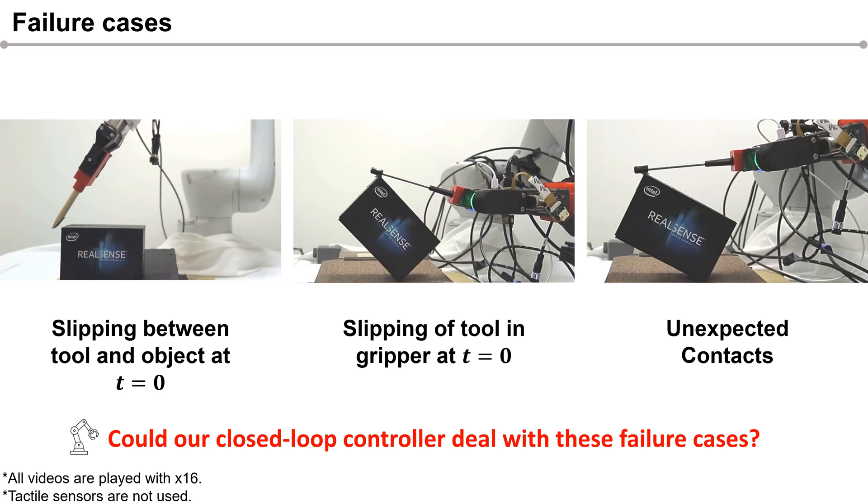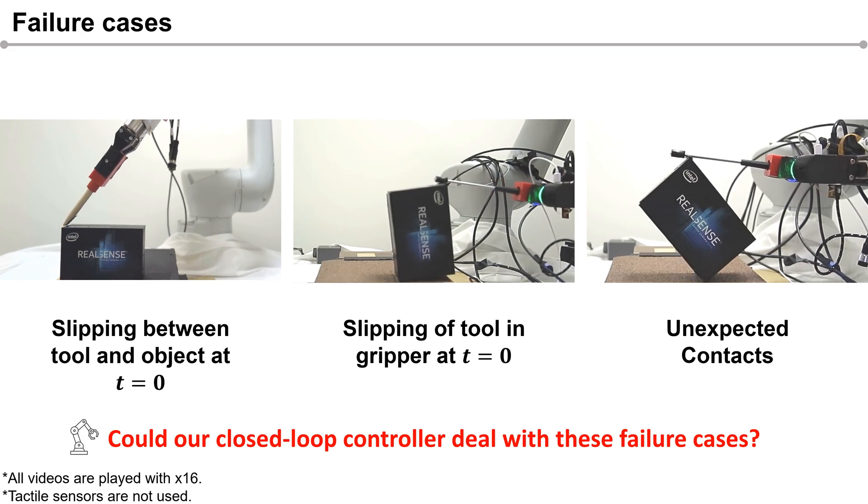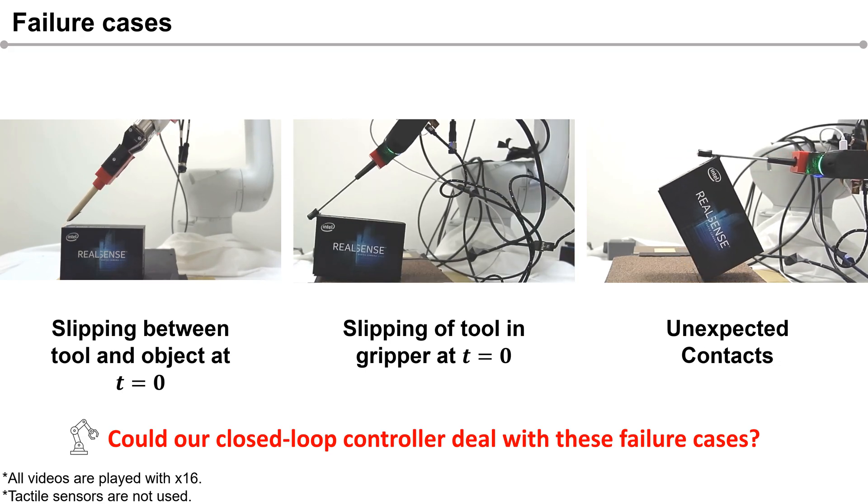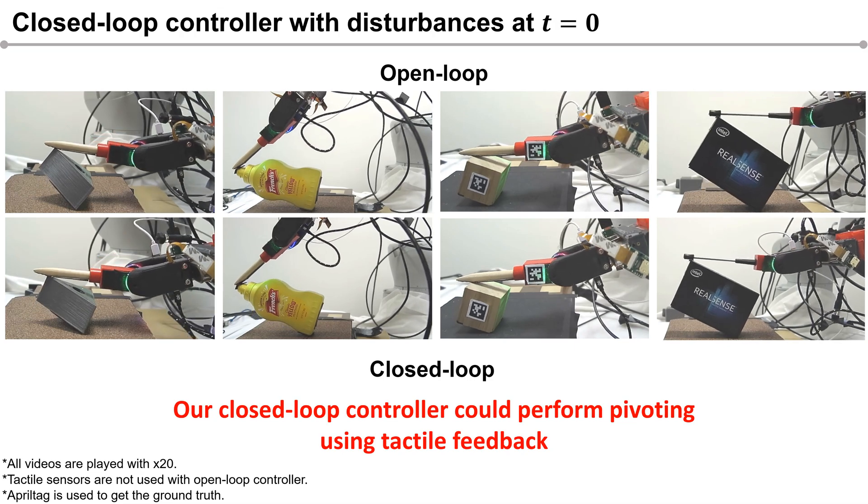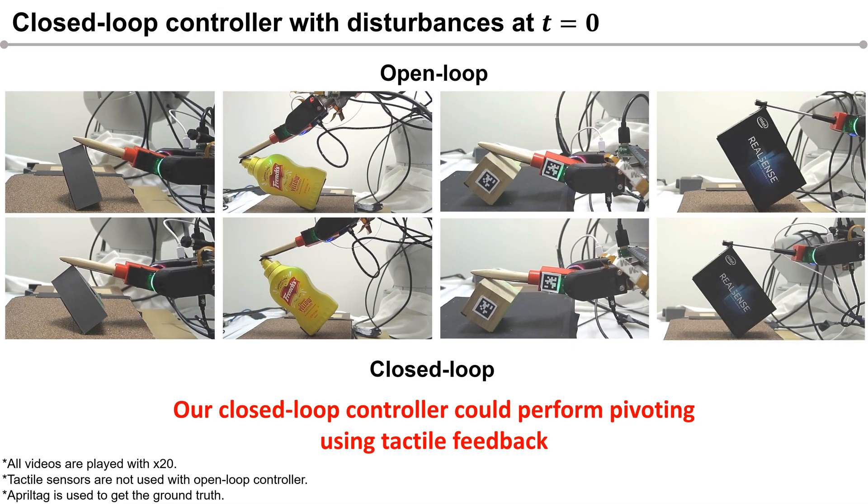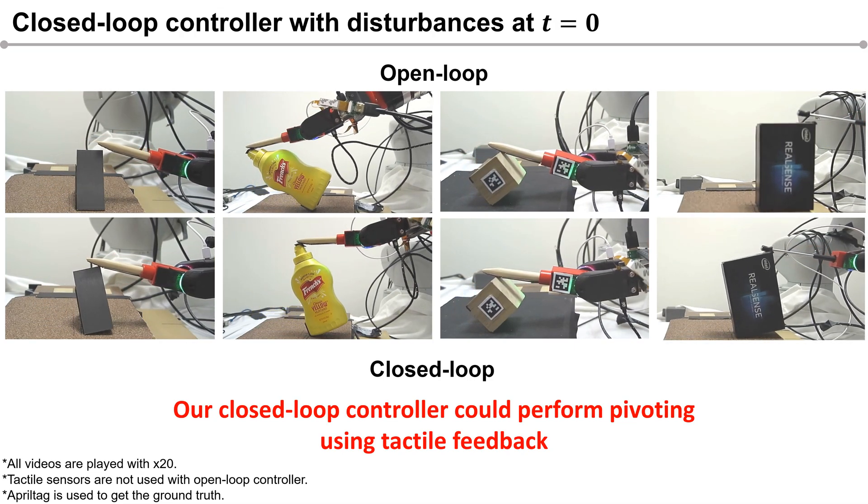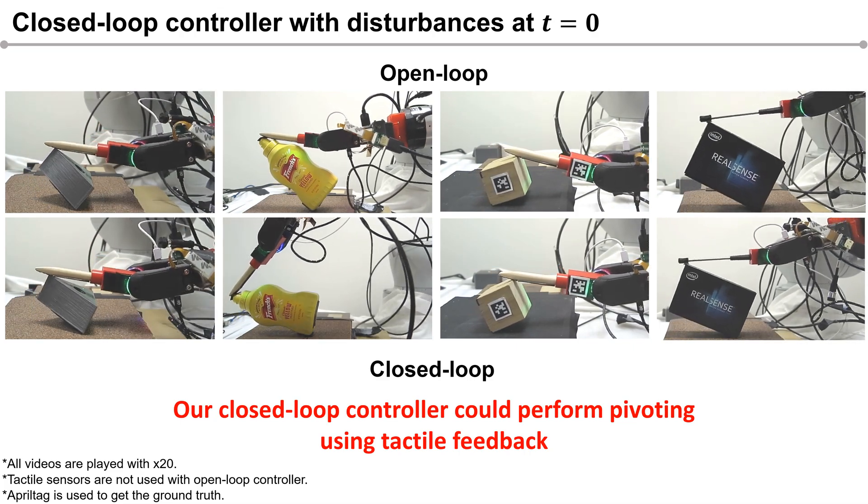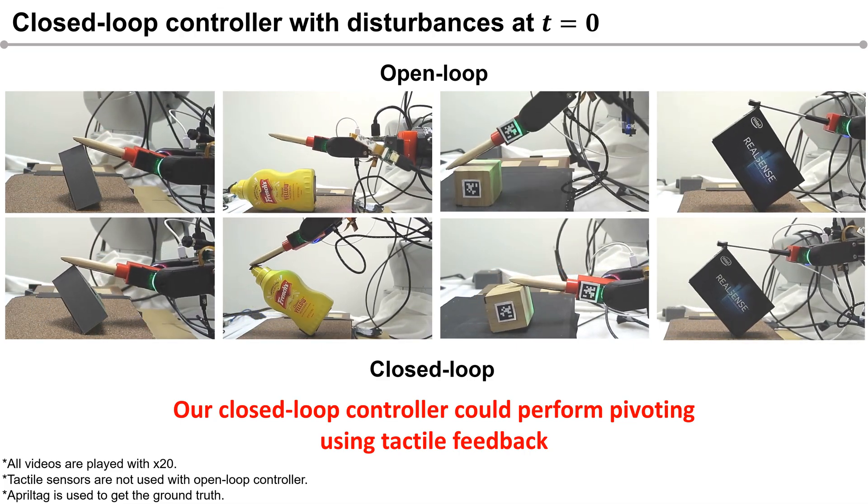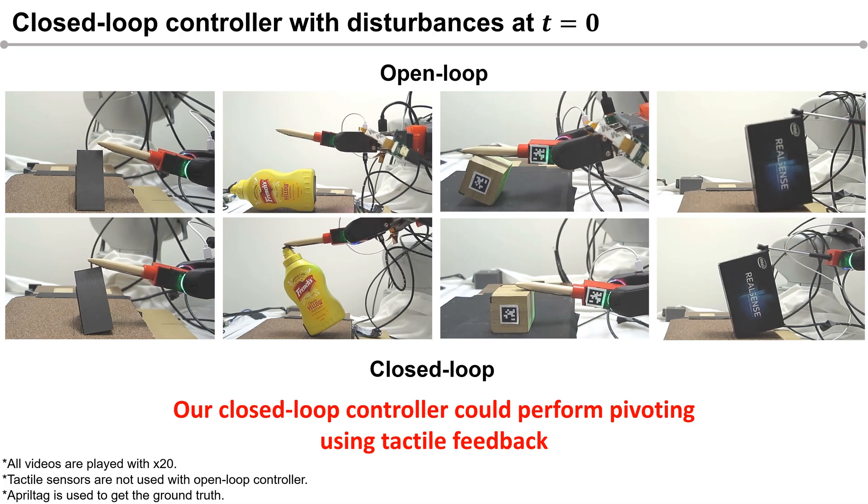To solve these issues, we present our closed-loop tool manipulation framework. We first compare the performance of the closed-loop controller with the open-loop controller. As we can see here, the closed-loop controller could perform pivoting successfully while the open-loop results in loss of contact with the object.